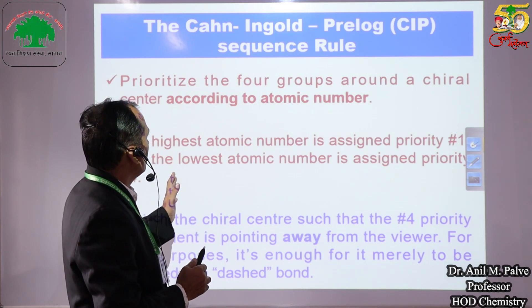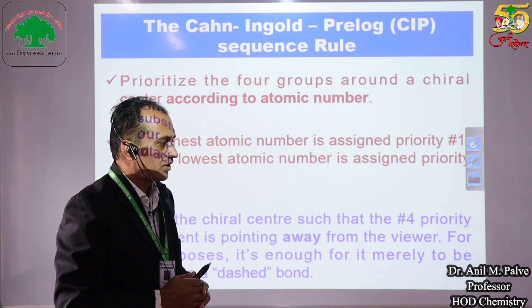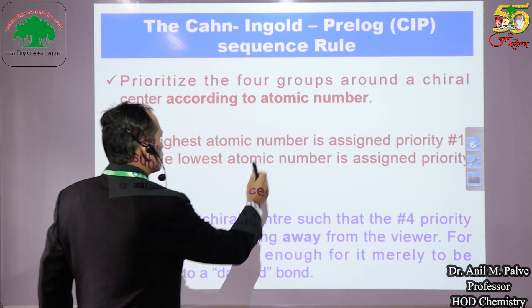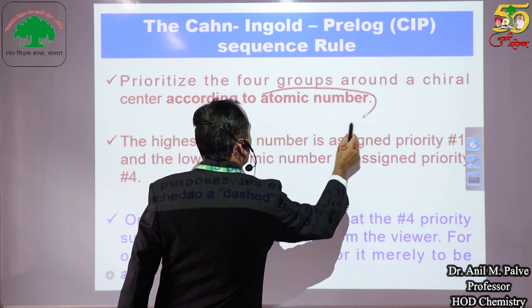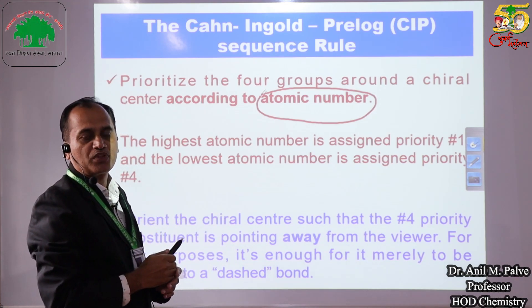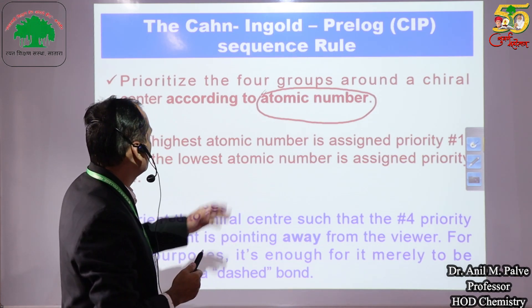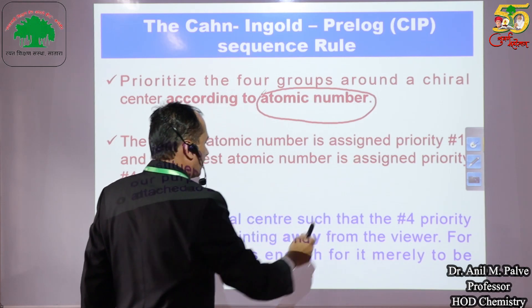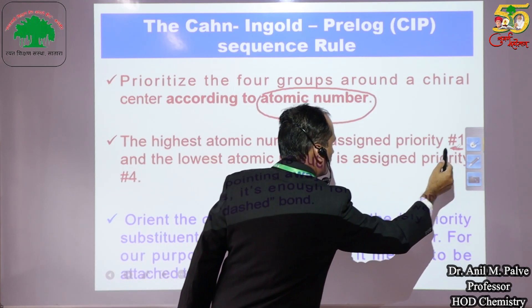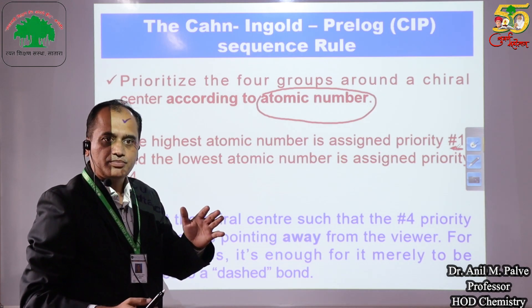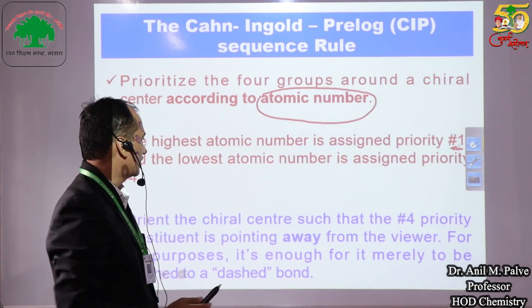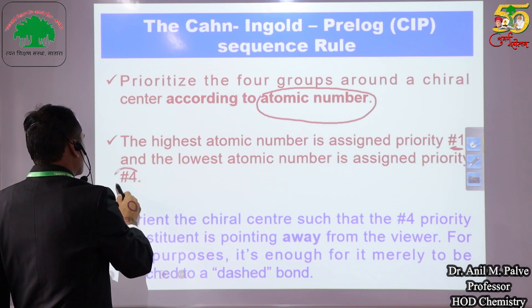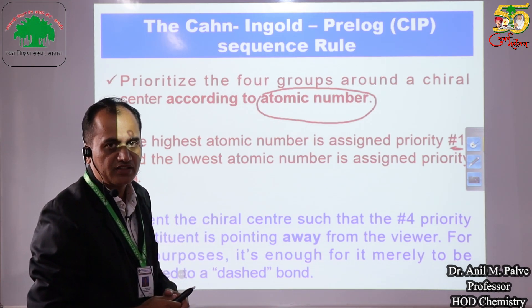The first rule in the Kahn-Ingold-Prelog rule is: prioritize the four groups around the chiral center according to atomic number. We have to look at the atomic number of the atom attached to the carbon atom. The highest atomic number is assigned priority 1, and the lowest atomic number is assigned priority 4.